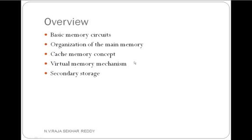Why? Because in today's world, every user or every person thinks: I want memory with increased size, increased speed, and low cost. Absolutely, this is not possible. If you have memory with increased size, the speed is less. If you want a faster device, it will cost more. So to satisfy all these requirements — size, speed, and cost criteria — we require main memory, cache memory, virtual memory, secondary storage, and other extra storage devices.